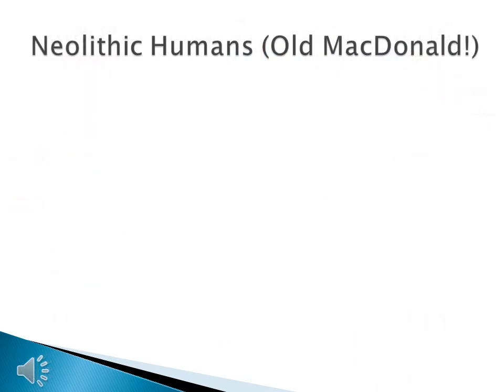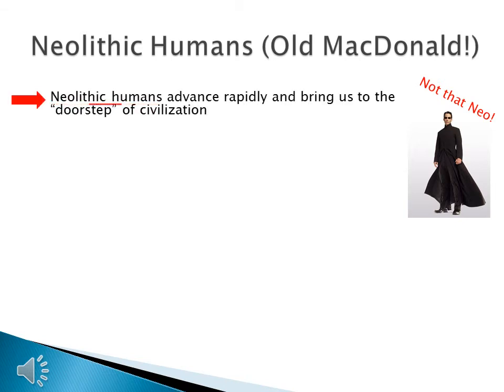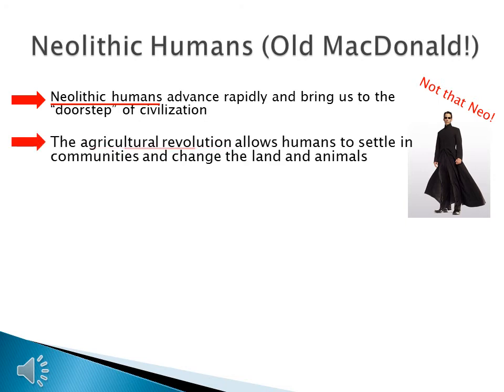Now let's look at humans from the Neolithic era. Neolithic humans are going to advance rapidly and bring us to the doorstep of civilization. From 10,000 BCE to 3,300 BCE, humans evolved quickly and got smarter. One of the key developments is the Agricultural Revolution, which allowed humans to settle in communities and change the land and animals to their advantage.